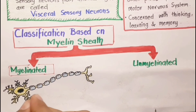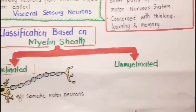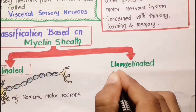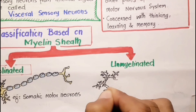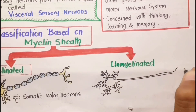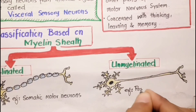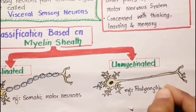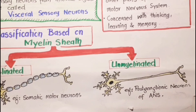The neurons supplying skeletal muscles — that is, somatic motor neurons — are myelinated. Unmyelinated neurons don't have a myelin sheath, as shown here. The post-ganglion neurons of the autonomic nervous system are unmyelinated.